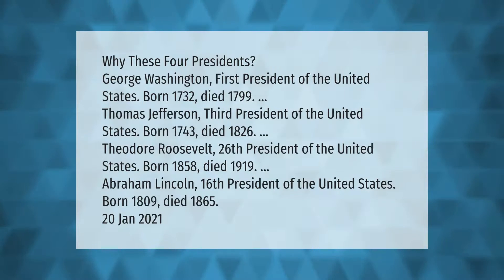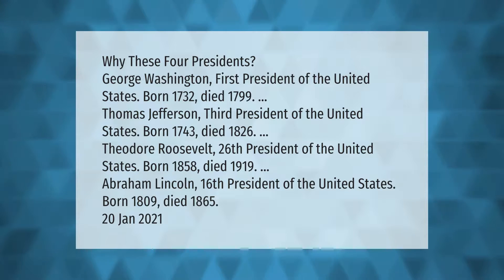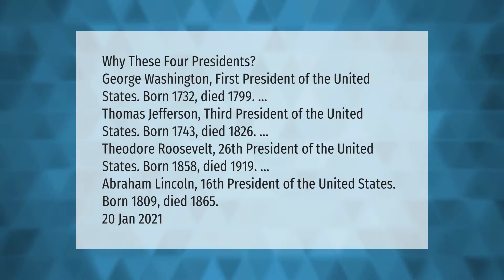Why these four presidents? George Washington, first president of the United States, born 1732, died 1799. Thomas Jefferson, third president, born 1743, died 1826. Theodore Roosevelt, 26th president, born 1858, died 1919. Abraham Lincoln, 16th president, born 1809, died 1865.